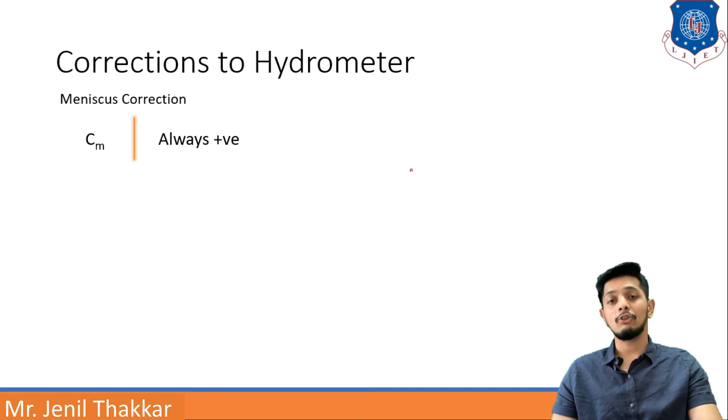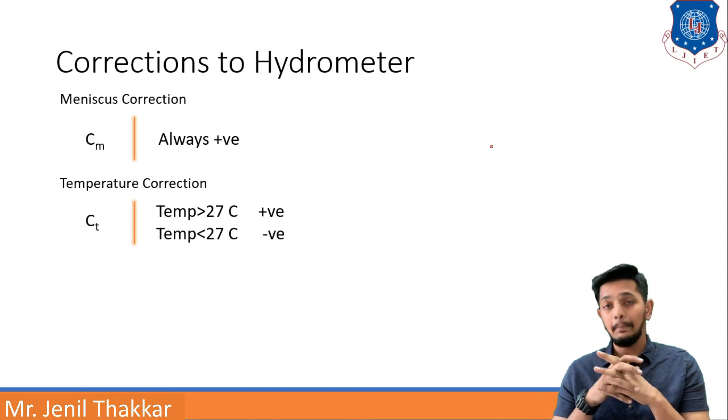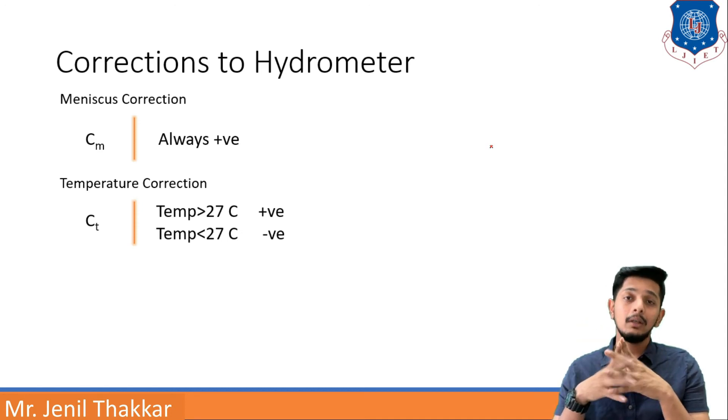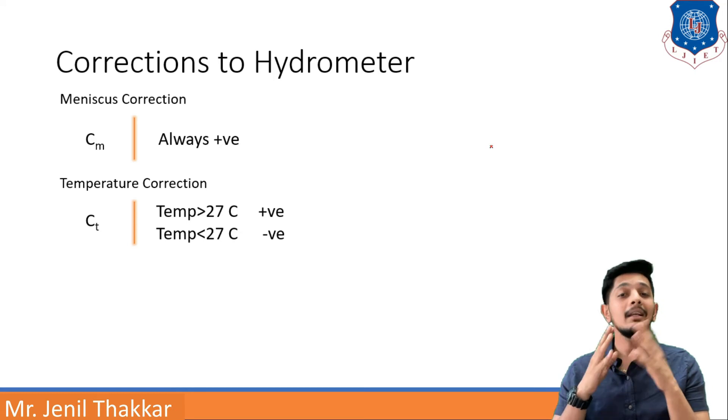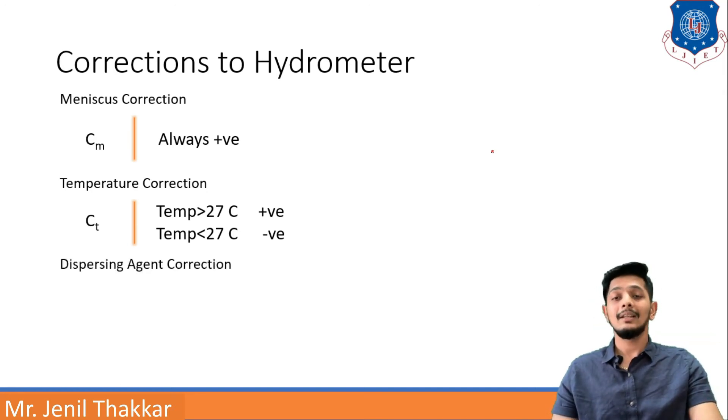Another correction is temperature correction. It is known as CT. Temperature correction will be dependent on temperature. If your temperature at that time is greater than 27 degrees it will be a positive correction. If the temperature is lesser than 27 degrees then it will be a negative correction.